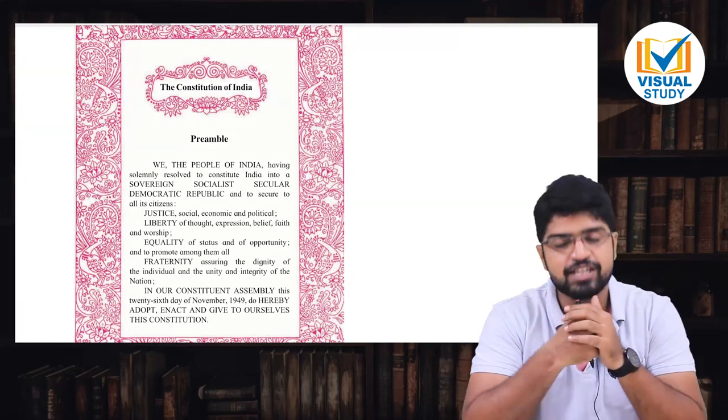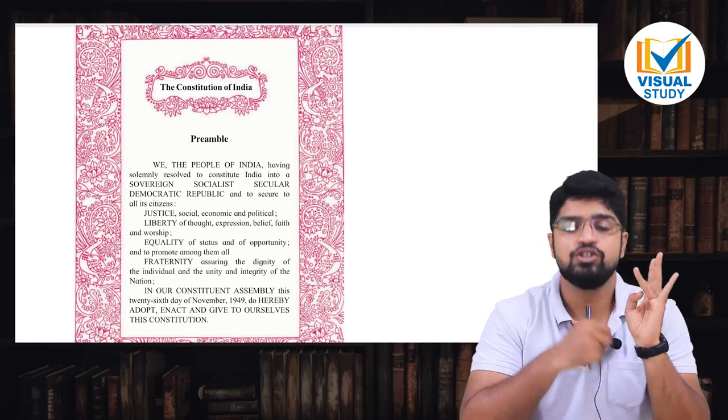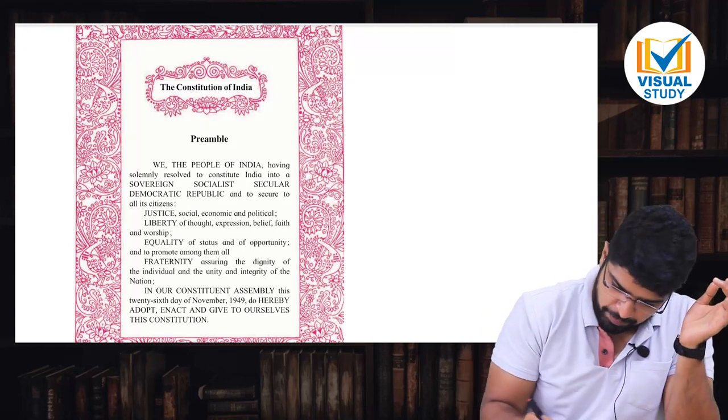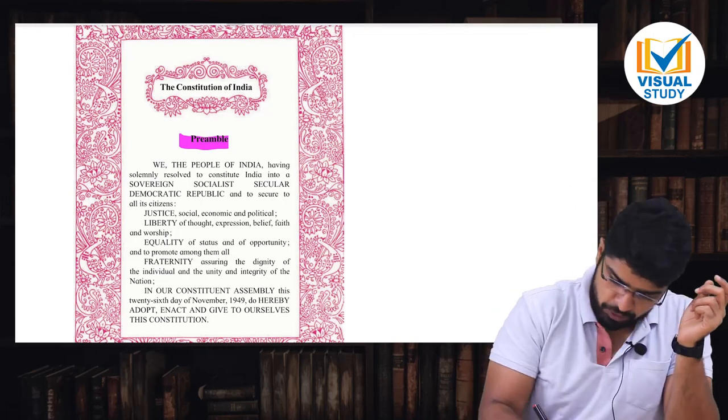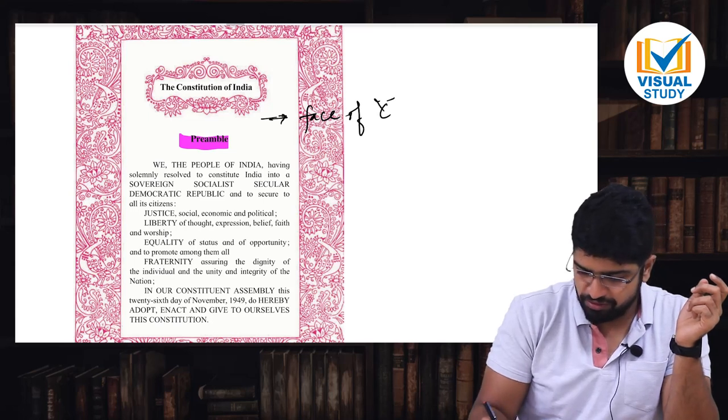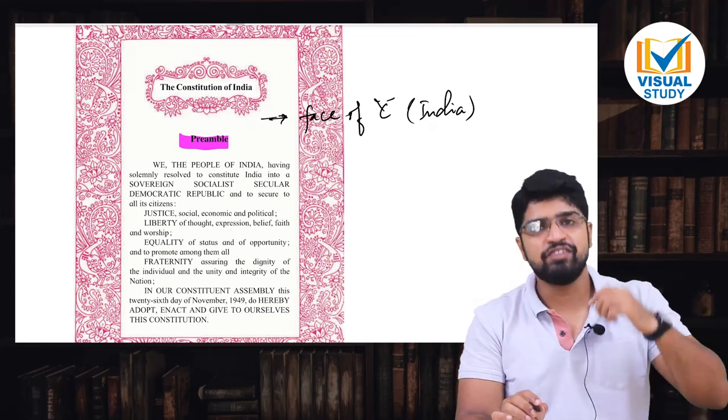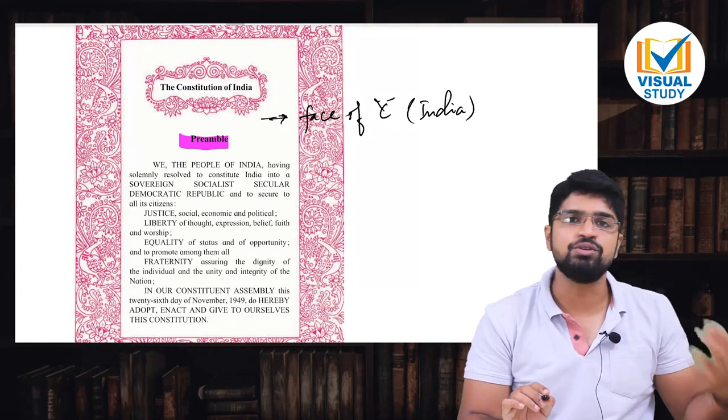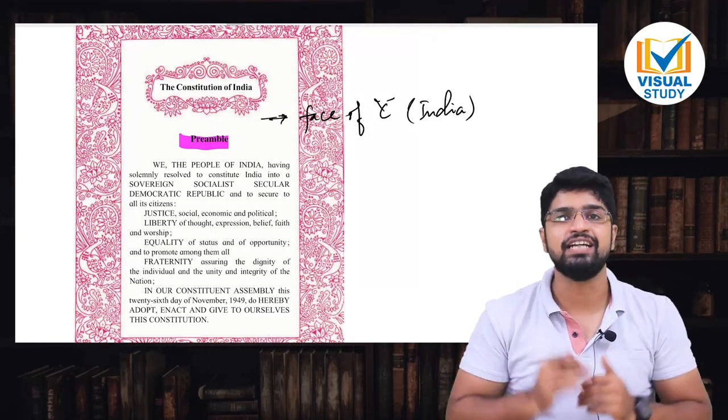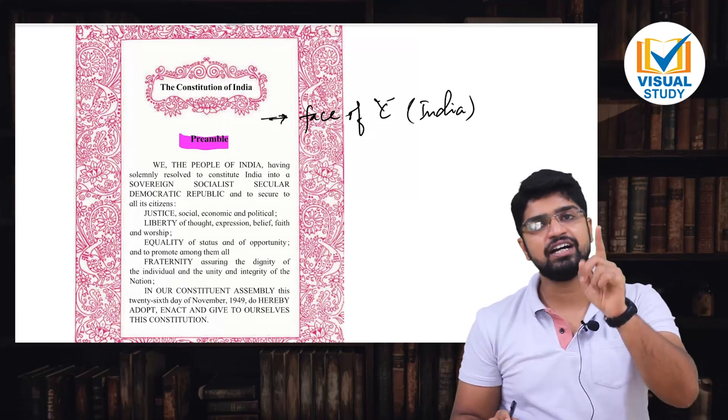Yahi history mein hi hum log political science karenge, jisme sabse pehle paath aata hai, constitution of India. The constitution of India is important to understand in simple things. Constitution of India kehte hai, we the people of India, having solemnly resolved to make India a secular, socialist, democratic, republic. Iska matlab hai, constitution ne kaha hai ki, preamble to the constitution is the first basic part. Preamble to the constitution is the face of constitution, is the face of India as such.